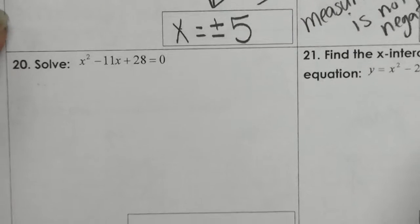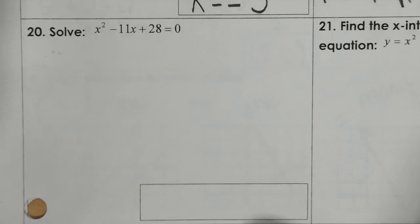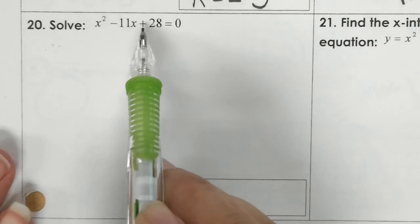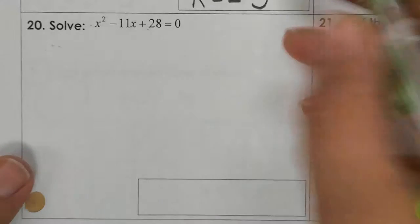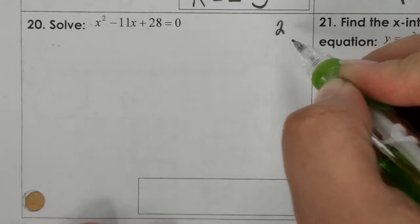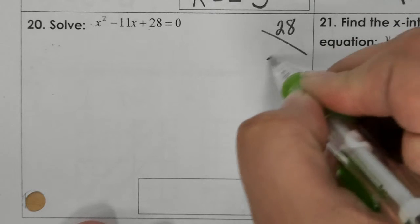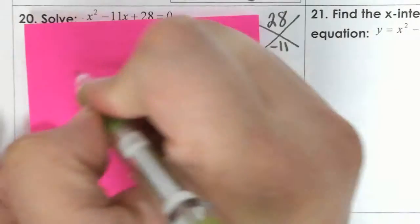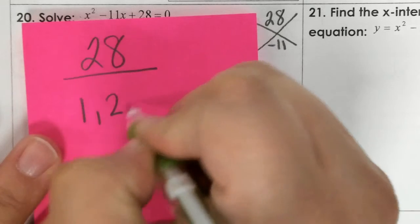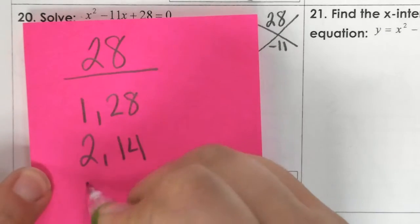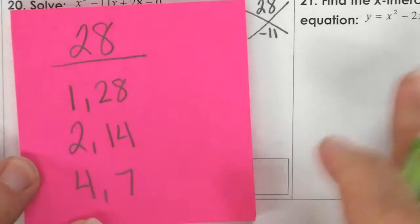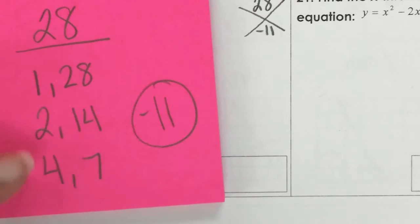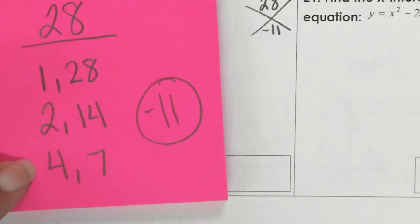For number 20, this says to solve. It does not tell you to factor. So I would look to see, can I factor this by doing 1 times 28 and trying to get to negative 11? The factors of 28 are 1 and 28, 2 and 14, 4 and 7. If my goal is to get to negative 11, can I do that using any of these pairs? I can.